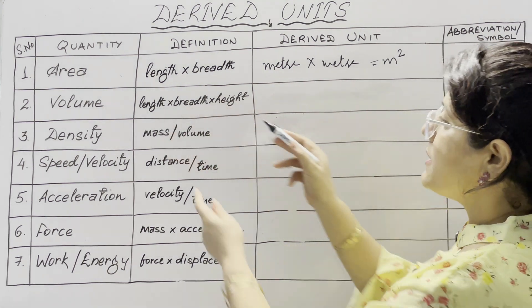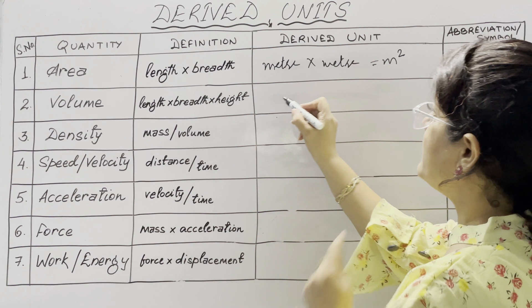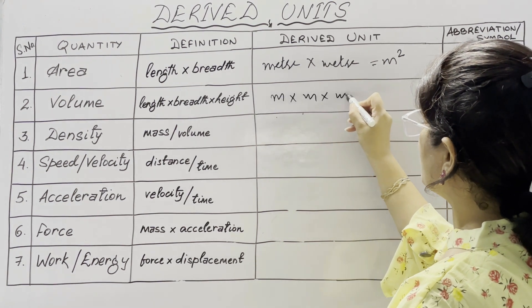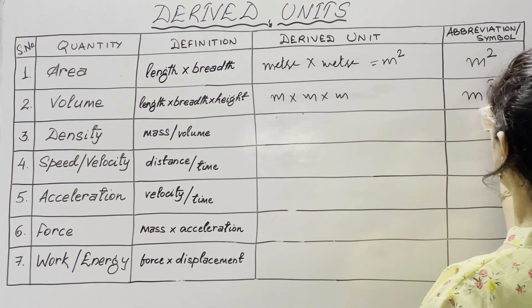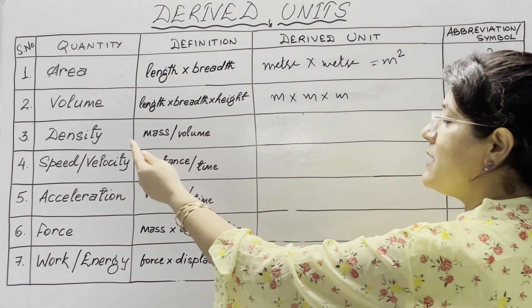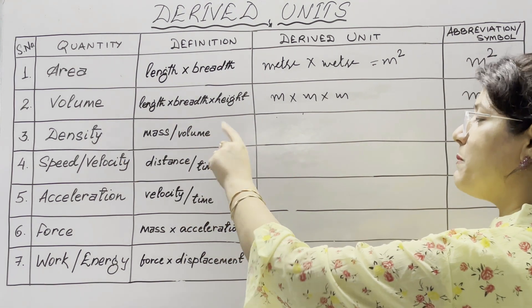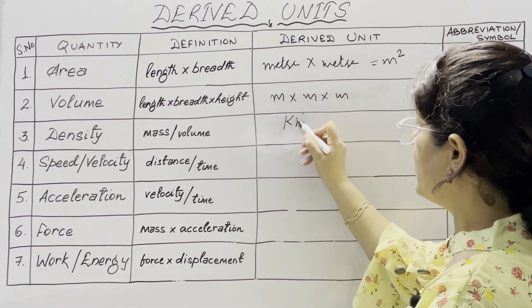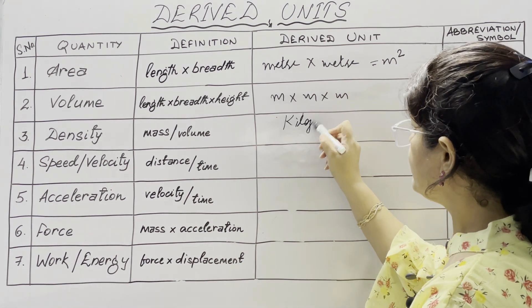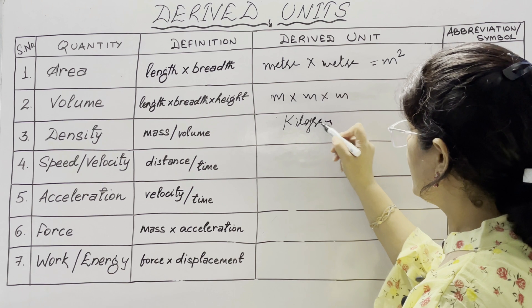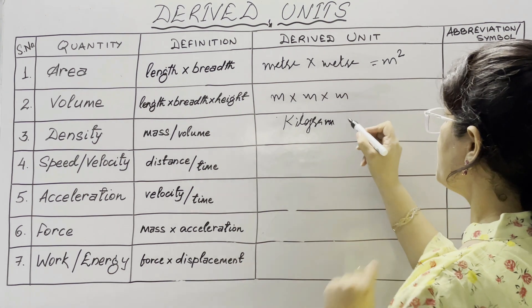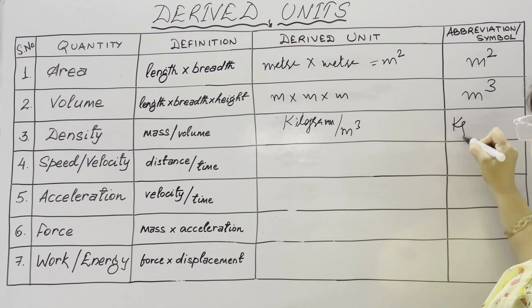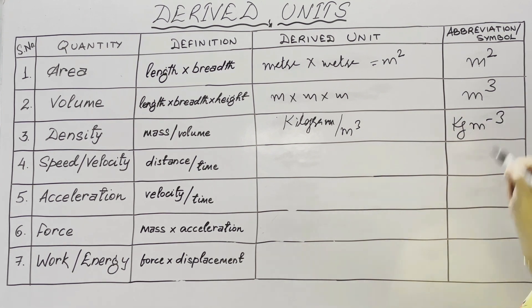Volume is the product of length, breadth, and height, so it is meter × meter × meter, which means meter cube. Density is the ratio of mass per unit volume. The SI unit of mass is kilogram and the unit of volume is meter cube, so the unit of density is kg per meter cube.